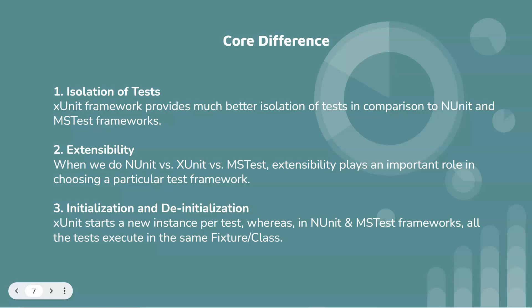The first difference is isolation of tests. XUnit framework provides much better isolation of tests in comparison to NUnit and MSTest framework. This is because for each test case, the test class is instantiated, executed, and is discarded after the execution. This ensures that tests can be executed in any order as there is reduced or no dependency between the tests. Executing each test as a separate instance minimizes the chances of one test causing the other test to fail.